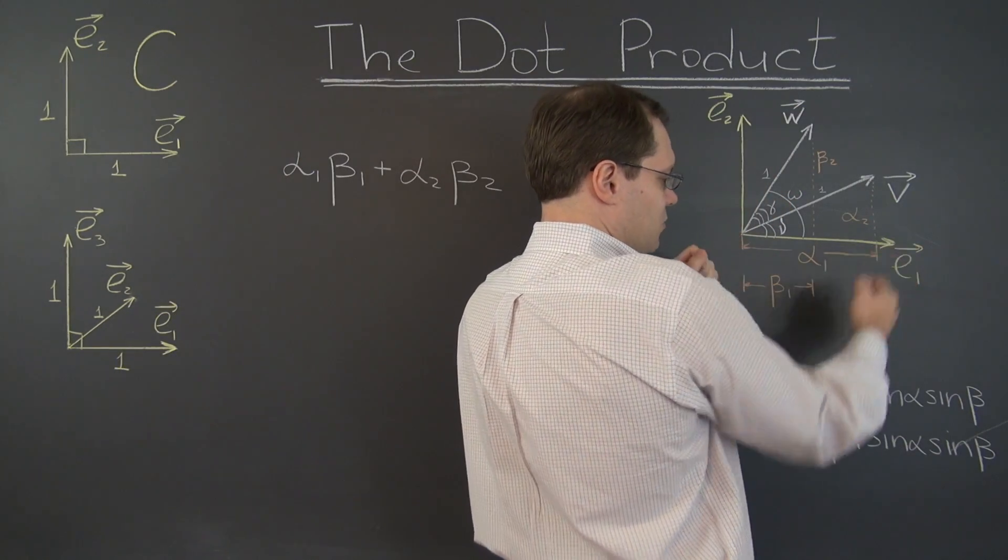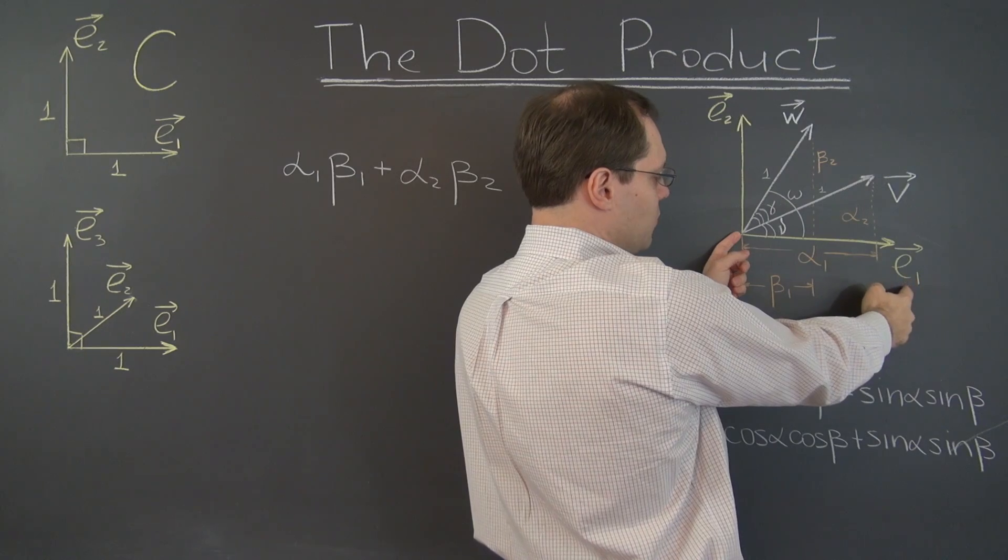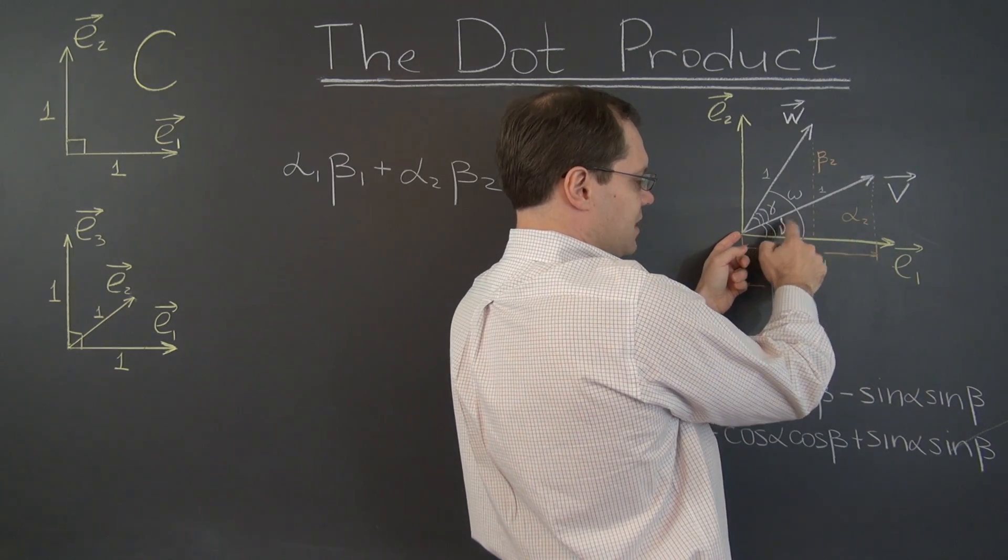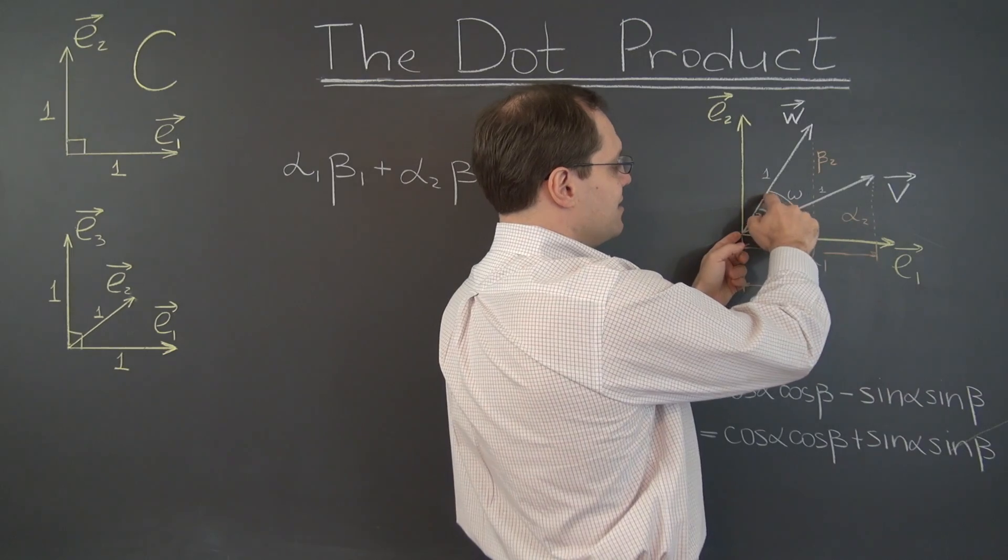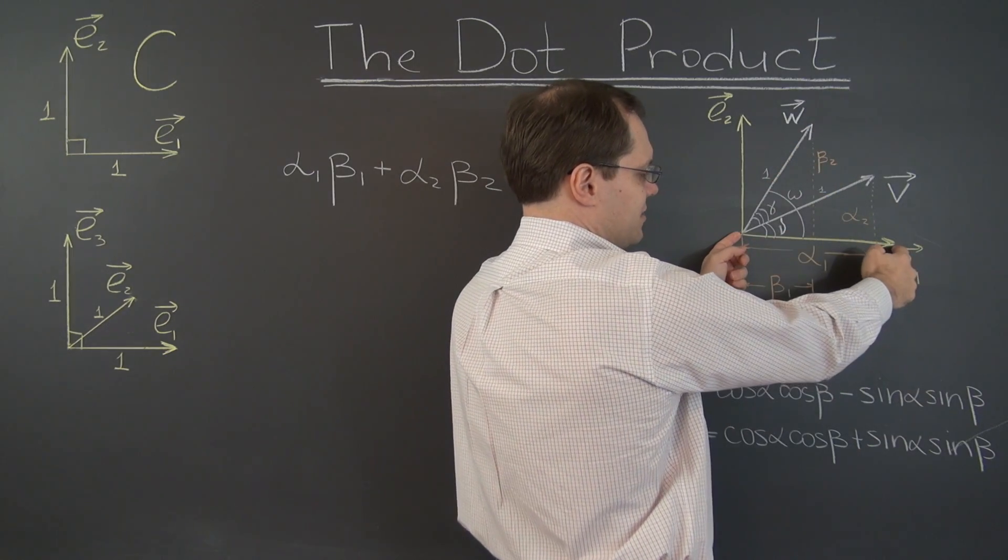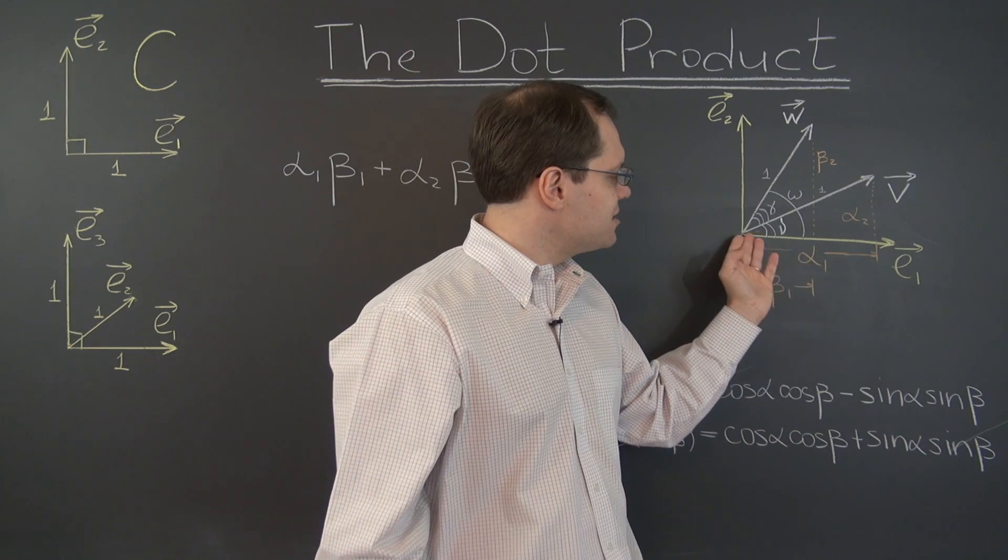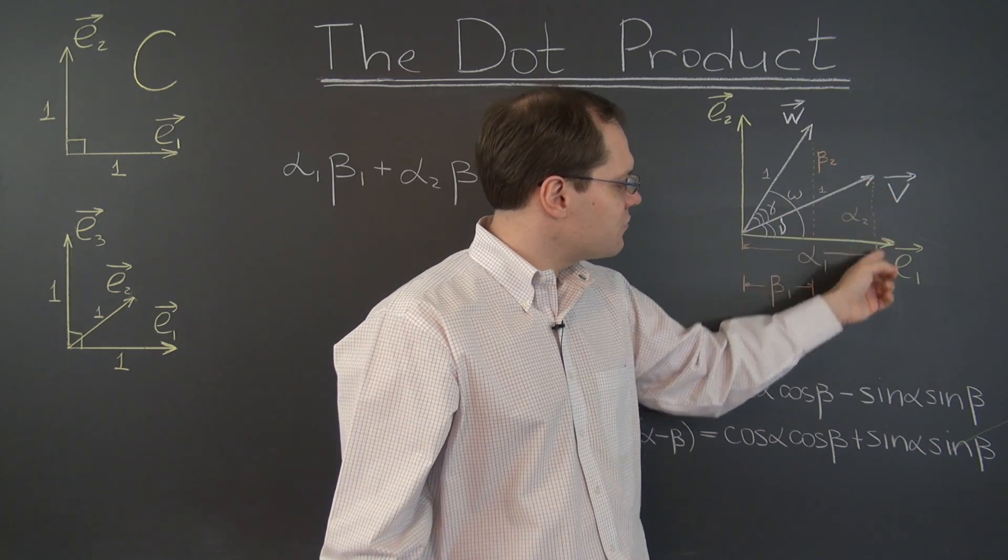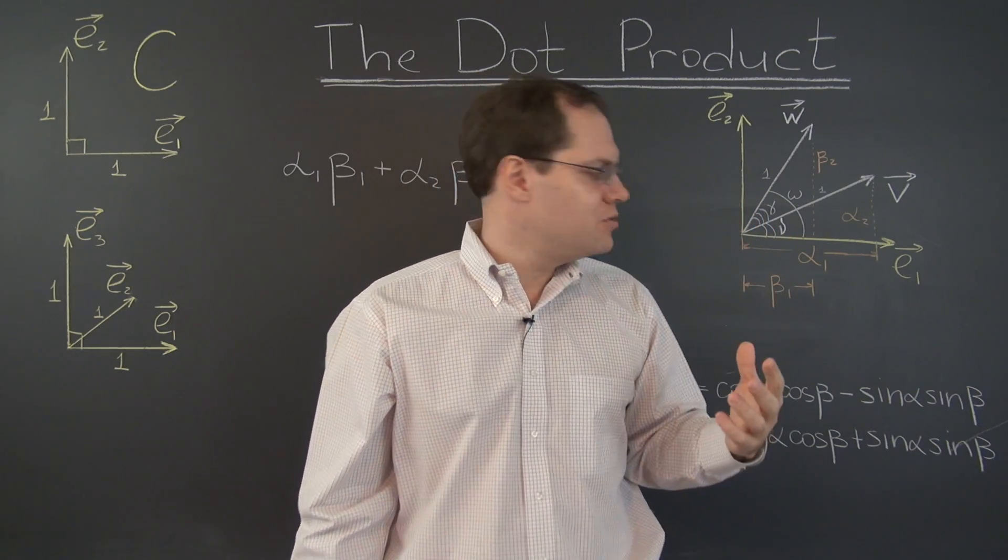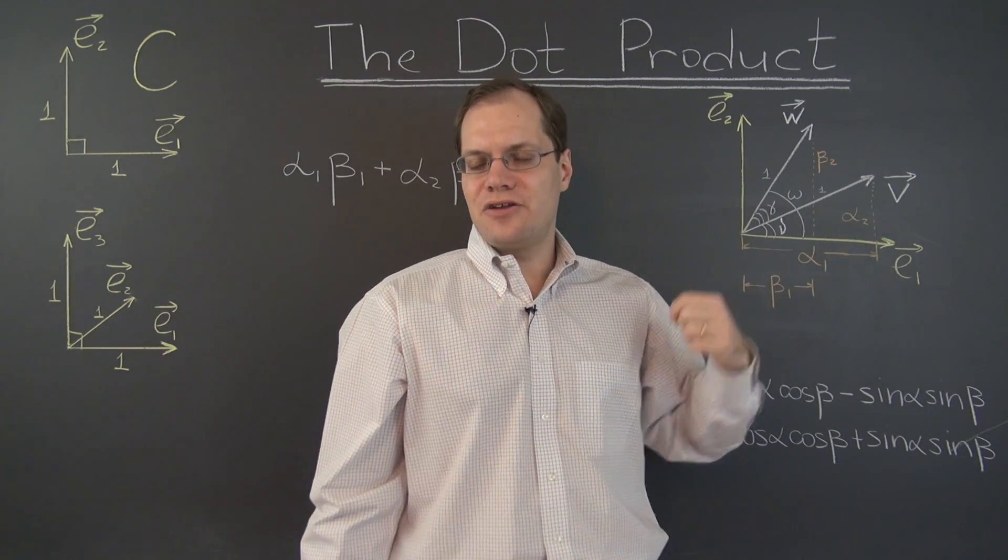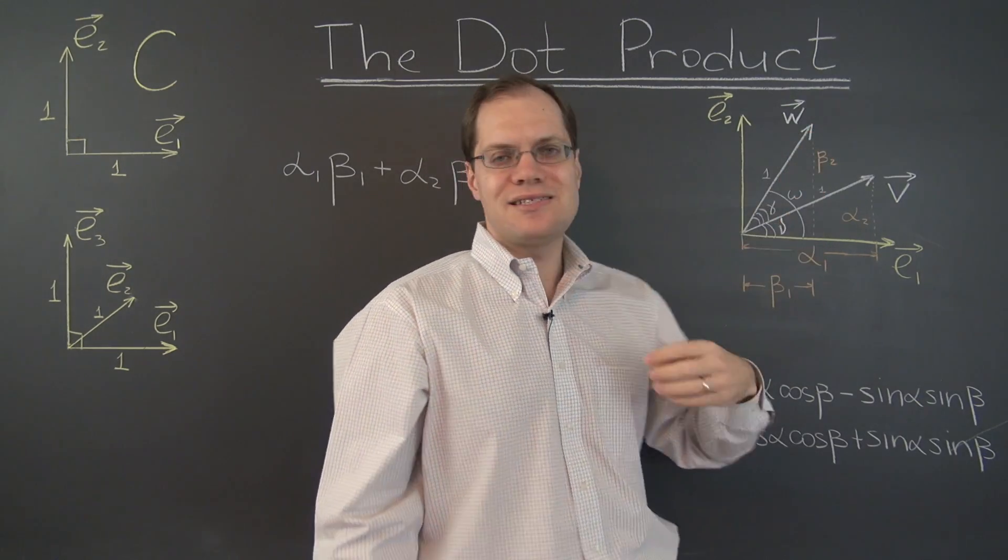And of course alpha 1, because E1 is unit length, equals V times cosine of the angle that V forms with E1. I gave those angles names. The angle that the vector V forms are called nu because the letter nu kind of looks like the letter V. And this angle that W forms with the basis vector E1, I called omega, because omega kind of looks like W. And so all you have to do is realize now that alpha 1 is the length of V from this triangle times cosine nu. And the length of V is 1, so it's just cosine nu. And alpha 2 is sine nu. And beta 1 is cosine omega. And beta 2 is sine omega.